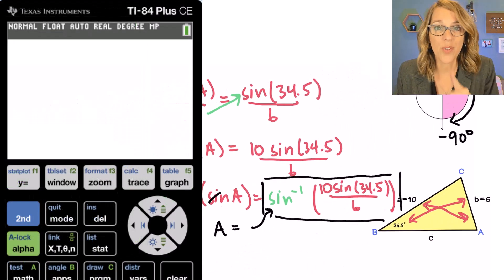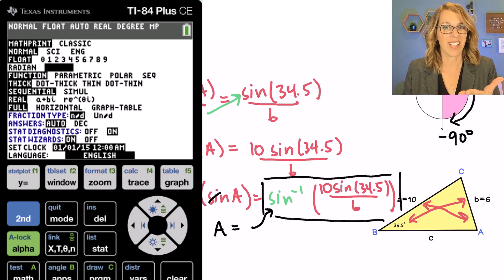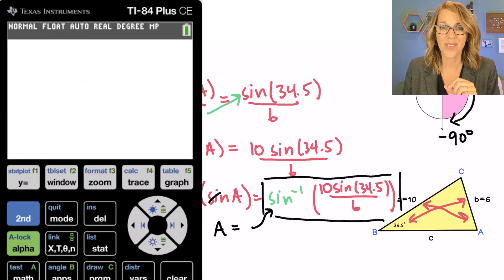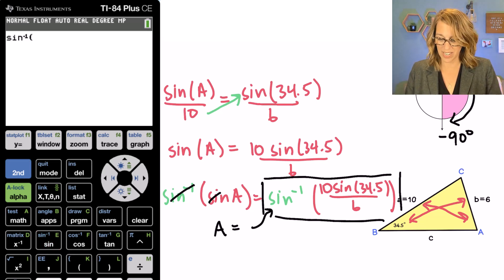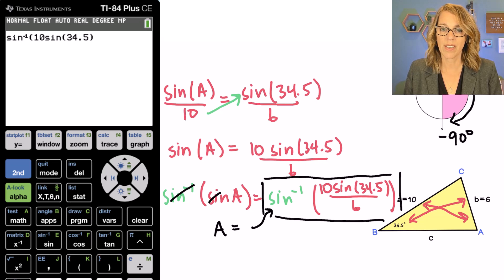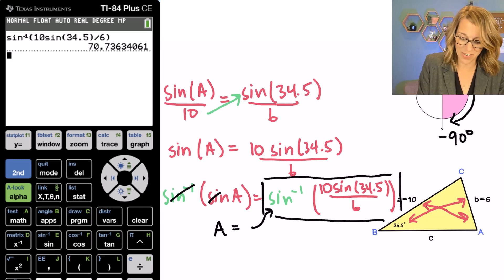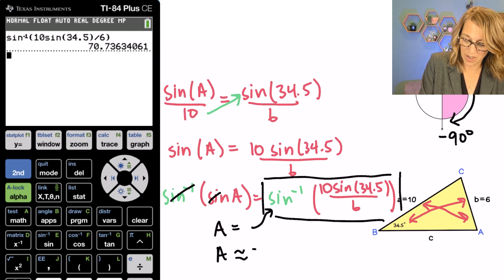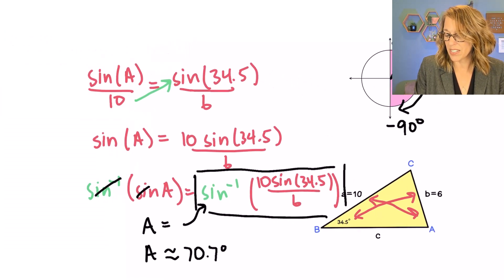First, make sure you're in degrees mode. Click on mode — my radian and degree line is the fourth line down. I am in degrees because it's highlighted. If you're not, arrow over to it and hit enter. Quit by hitting second followed by mode. Grab that sine inverse — it's the second of sine on a TI calculator — and type it in exactly: 10 times the sine of 34.5, in parentheses, divided by 6. We get an angle measure between negative 90 and positive 90 degrees, so A is approximately 70.7 degrees.